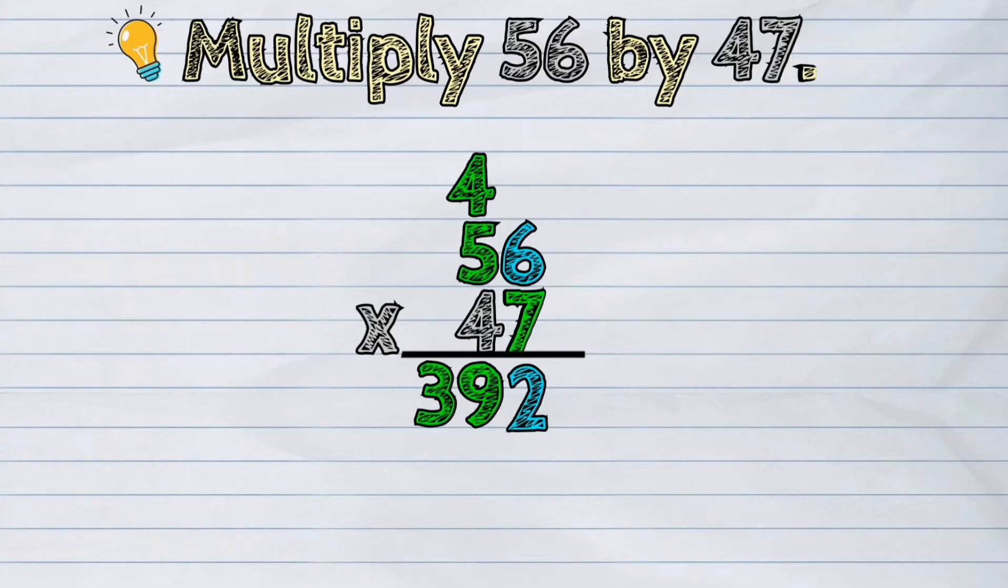We will now be multiplying with the tens column. But first, we should write 0 in the 1th column because we are now multiplying the value from the tens column.